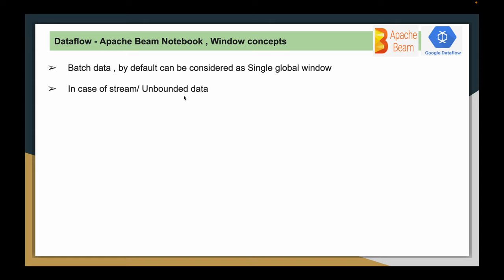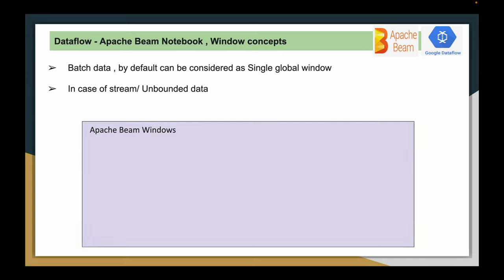The source which is pushing the data into the PCollection is continuously updating that data. In such cases, it will be almost impossible to capture all the elements in a single global window like batch data, because the data is still coming. This is where the Windows concept is very helpful to process unbounded data.